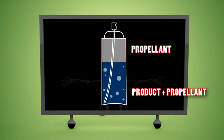At the base of the can is a mixture of a liquefied form of the propellant, combined with the actual product, whether it's bug spray, air freshener, or whipped cream.